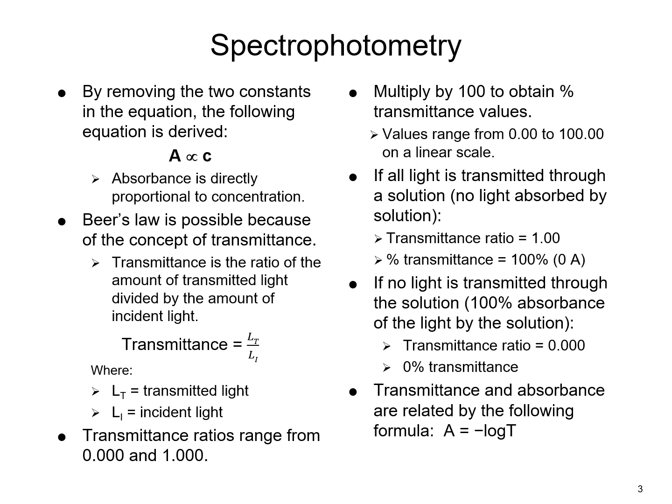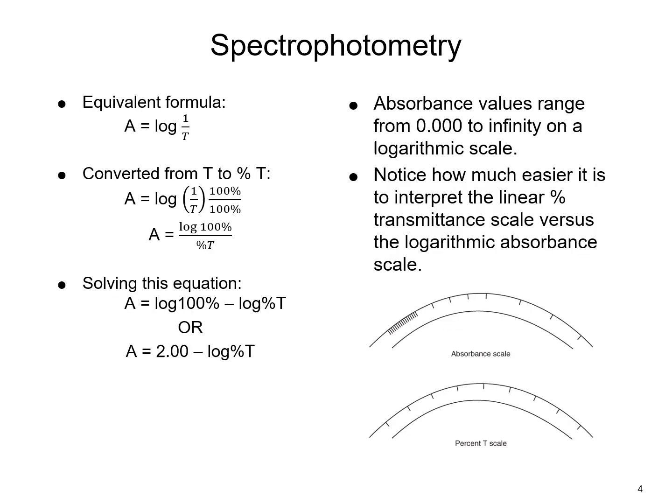Mathematically, transmittance and absorbance are related by the formula: A equals negative log times transmittance. We can manipulate that formula to get equivalent forms, and it can further be converted from transmittance to percent transmittance, ultimately giving the equation: absorbance equals 2.0 minus log of percent transmittance.